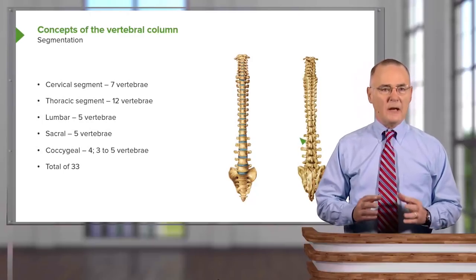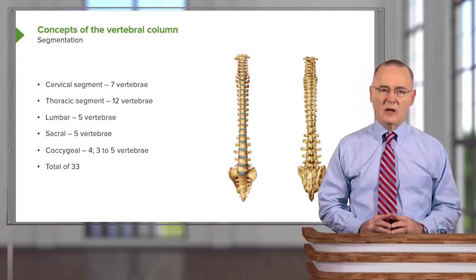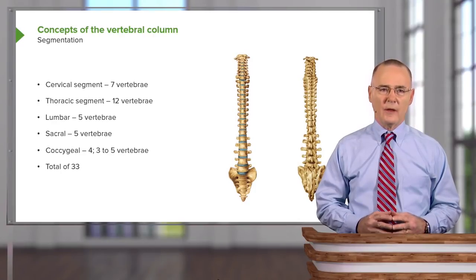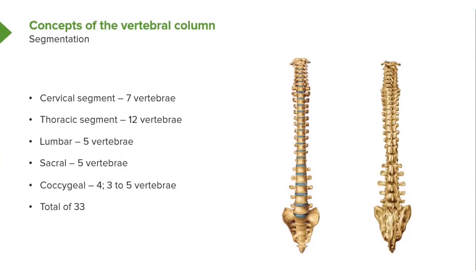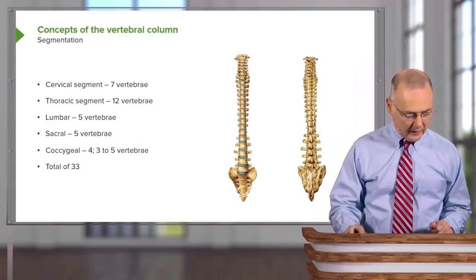Let's take a look at some basic concepts of the vertebral column, starting with segmentation. Within the vertebral column are various segments. We have a cervical segment represented by the first seven vertebrae, seen here in both anterior and posterior views. The thoracic segment is the next 12 vertebrae, seen in this general region both anteriorly and posteriorly. Just inferior to the thoracic segment, we have the lumbar region with five lumbar vertebrae.